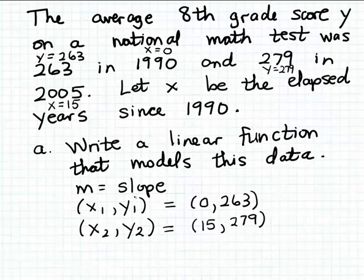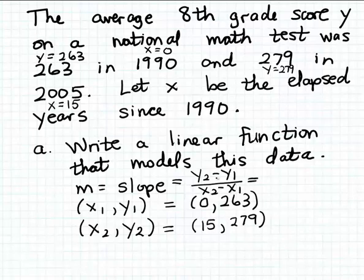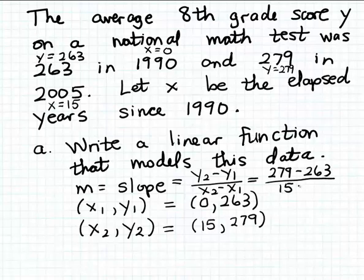Now we can calculate the slope and apply the point-slope formula. Recall that slope is rise over run — the difference in y-coordinates divided by the difference in x-coordinates for two points. With y₂ = 279, y₁ = 263, x₂ = 15, and x₁ = 0, the slope is (279 − 263) / (15 − 0) = 16/15.